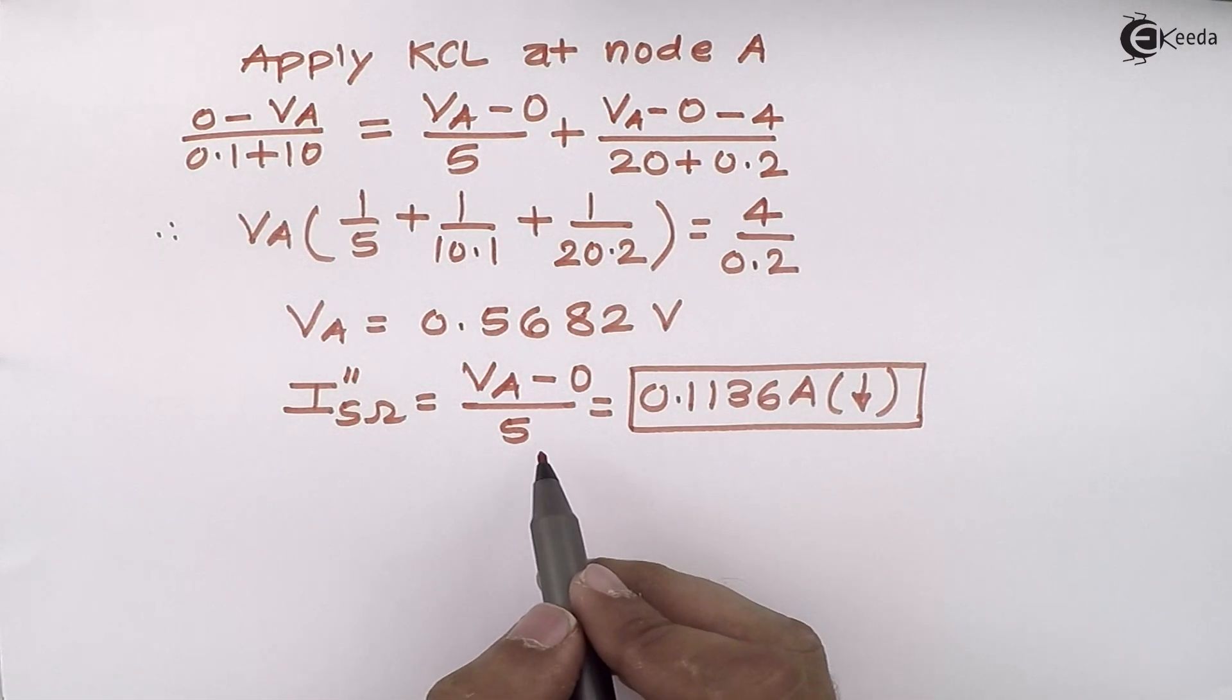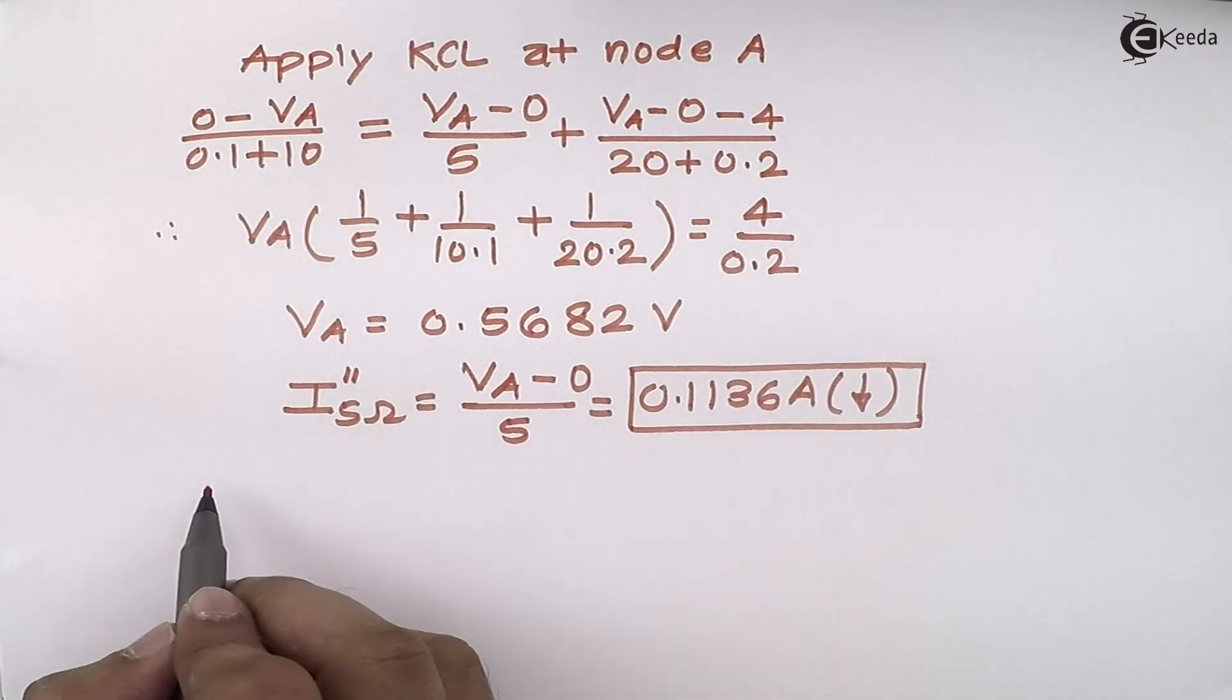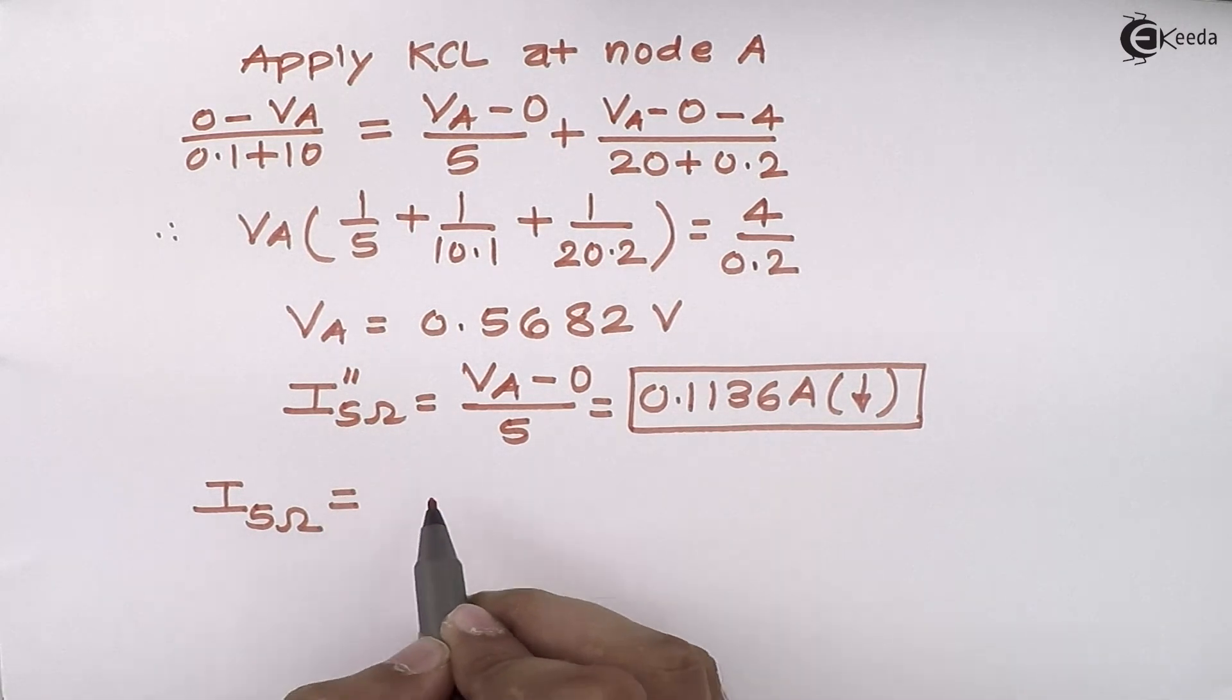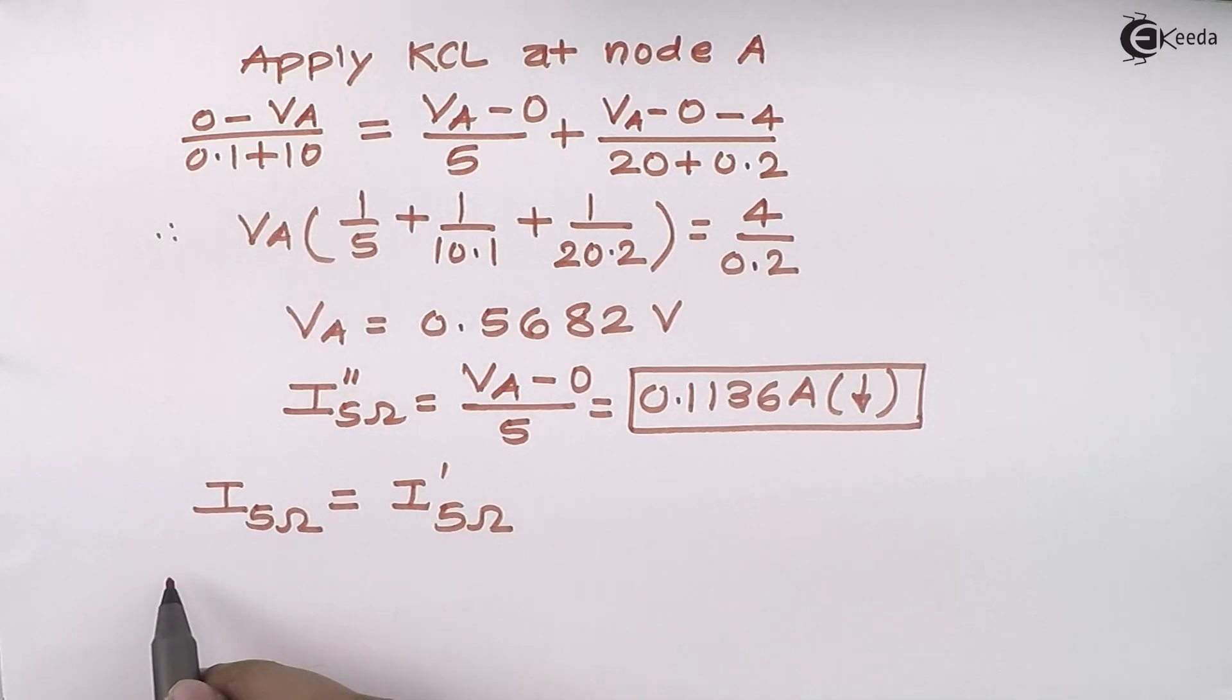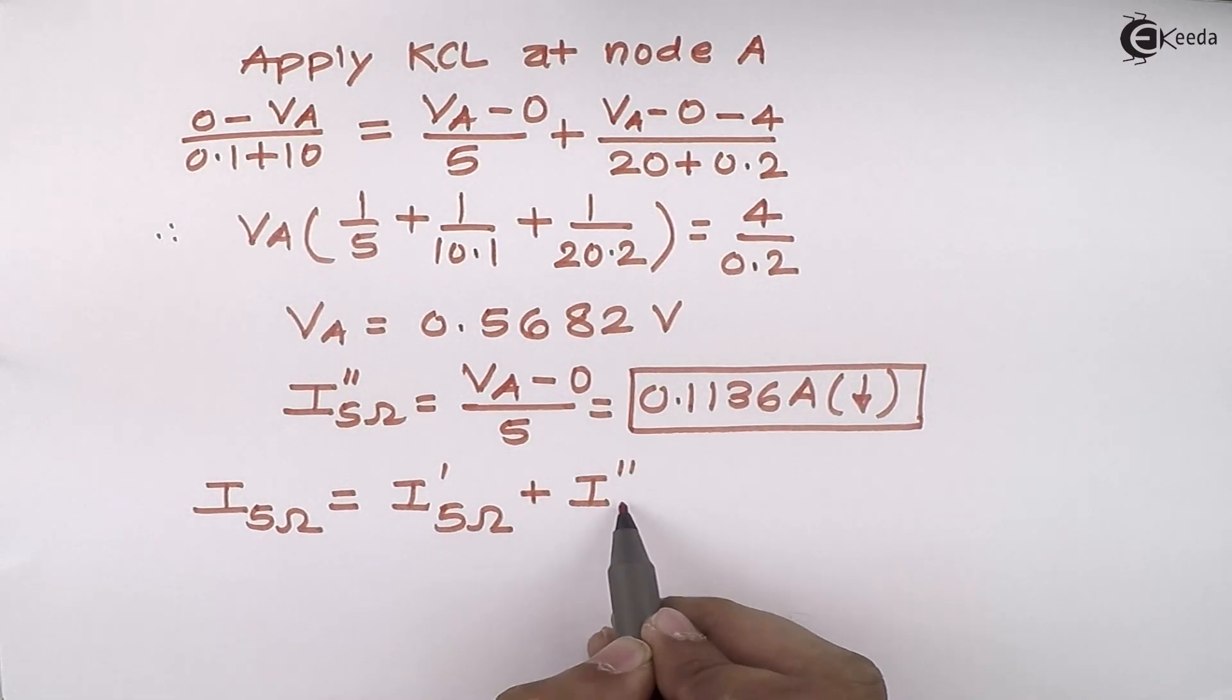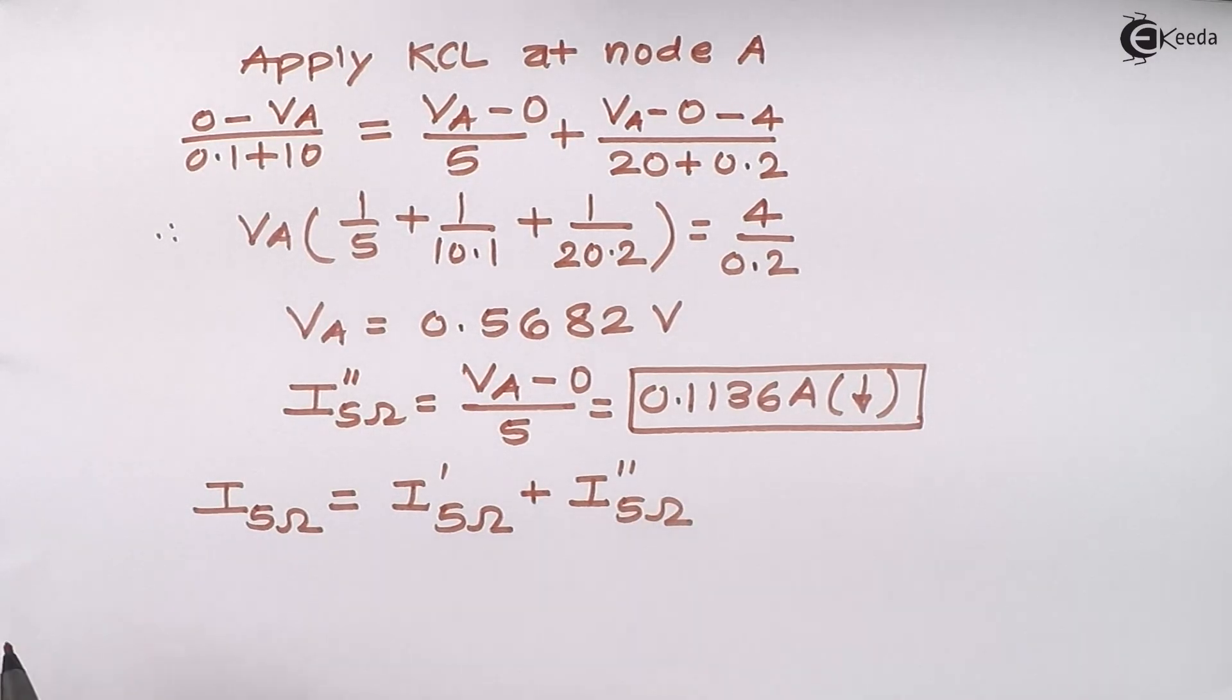As per the statement, the total response or total current flowing through the 5 ohm is the algebraic sum of current due to 2 volt and current due to 4 volt. Algebraic means both the directions need to be matched. If there is a mismatch...